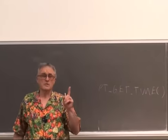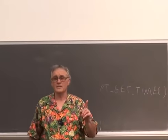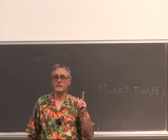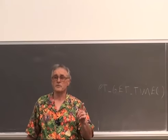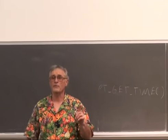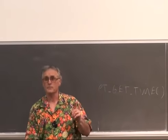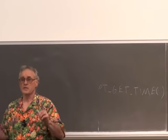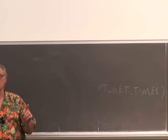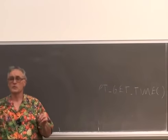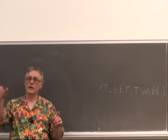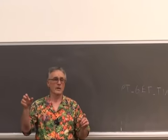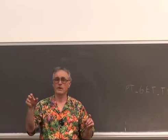ptGetTime uses the 1 millisecond thread timer that runs in an interrupt service routine off of timer 5. It uses system time, which is just ticking away at a millisecond rate.